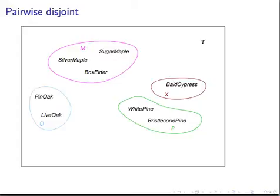Second, the name partition may seem misplaced at first. A partition of a set is a set of subsets of that set, as in the case here, the sets M, X, P, and Q, as subsets of T, such that two conditions hold.